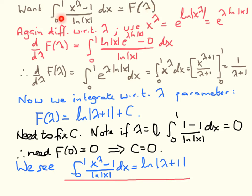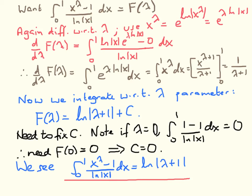Differentiating both sides, the derivative of the integral with respect to λ is obtained by pulling the derivative through the integral sign. We differentiate e^(λ log x) — the only place λ occurs. The result is log(x) times e^(λ log x) as a factor, minus 0 (the derivative of 1), all divided by log(x). At this stage we see that log(x) in the numerator and log(x) in the denominator cancel.